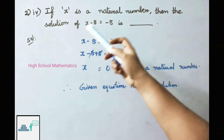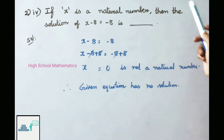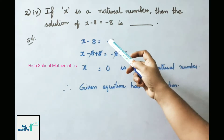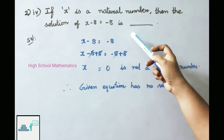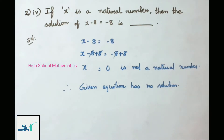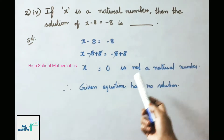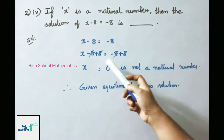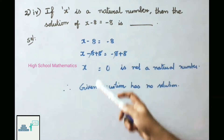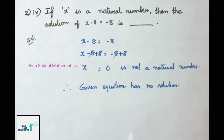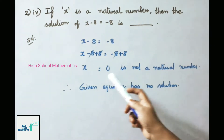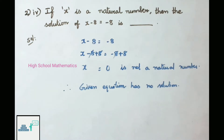Fourth: if x is a natural number, then the solution of x - 8 = -8. Adding 8 on both sides: x - 8 + 8 = -8 + 8. Both sides cancel, so x = 0. But 0 is not a natural number. Therefore the given equation has no solution.